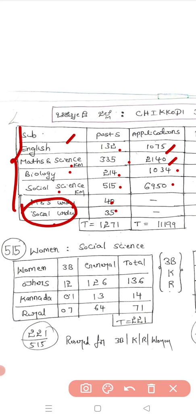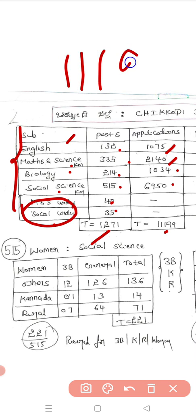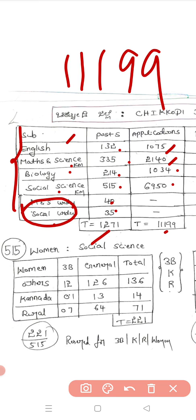The total posts are 1,271, and the total applications for Chikodi district is 11,199, which is the highest in Karnataka state. Let's cross-check again.